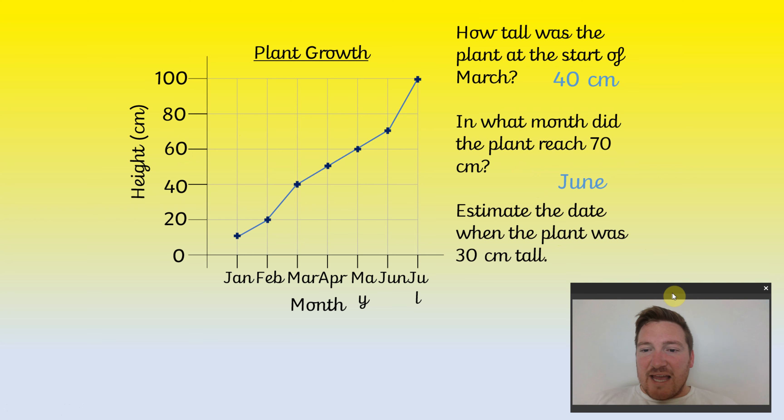And last but not least, estimate the date when the plant was 30 centimeters tall. So again find roughly where 30 centimeters is and check the date. So sometime between February and March, if you put something like the 14th or anything a few days either side of that, that'll be a good answer. Well done.